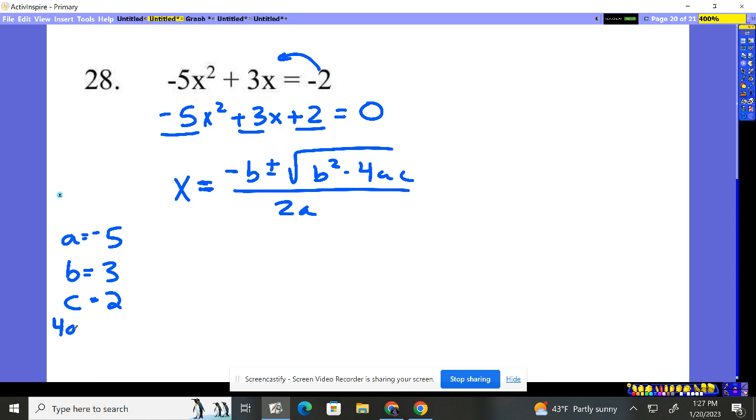And I like you to always do 4ac. I like you to go ahead and calculate this 4ac piece. 4 times negative 5, negative 20. Negative 20 times 2, negative 40. All I've got to do now is just plug in the numbers, and I should be good.